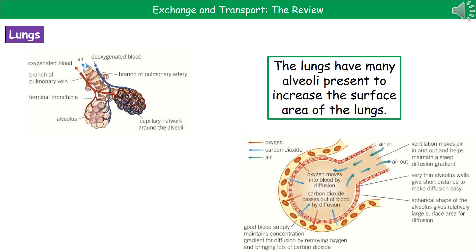If we consider the lungs, at the very end of all those tubes that get smaller and smaller are structures called the alveoli — you can see a picture in the top left. The whole purpose of the alveoli being present in our lungs is to increase the surface area, giving us a huge surface area across which gases can be exchanged between the blood and the lungs.